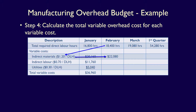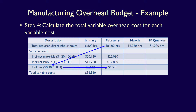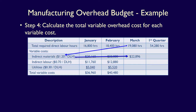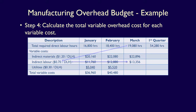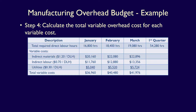Moving on to February: 18,400 hours × $1.20 = $22,080 for indirect materials; 18,400 × $0.70 = $12,880 for indirect labour; 18,400 × $0.30 = $5,520 for utilities. Total February variable costs: $40,480. Moving on to March: 19,080 hours × $1.20 = $22,896 for indirect materials; 19,080 × $0.70 = $13,356 for indirect labour; 19,800 × $0.30 = $5,724 for utilities. Total variable costs for March: $41,976.